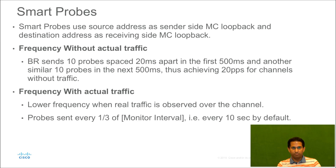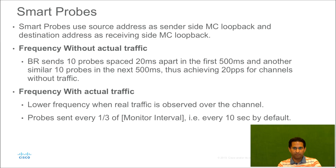Let's go through some basic information about smart probes. These probes use the source address as the loopback address of the master controller on the center side, and the destination address is the master controller loopback address on the spoke site. The frequency of these probes without actual traffic flow between the hub and the spoke site is 10 probes spaced 20 milliseconds apart in the first 500 milliseconds, and another similar 10 probes in the next 500 milliseconds. Thus, 20 packets per second for channels without traffic is achieved when there is no traffic flowing between the hub and the spoke site.